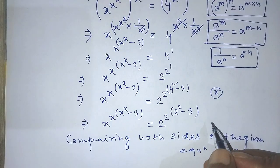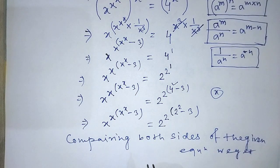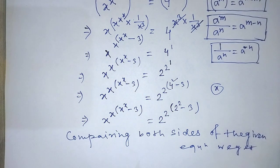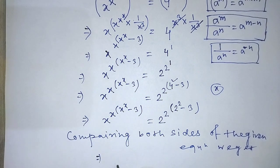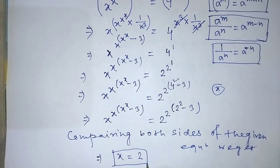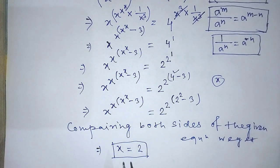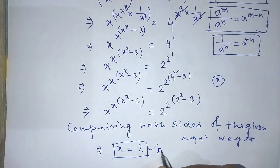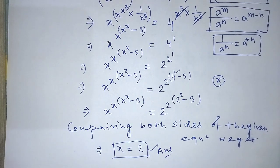To find the value of x from this equation, we compare both sides. After comparing both sides of this equation, we can write x is equal to 2. Our answer is complete. If you like this video and this trick, please support me and subscribe to our channel. Thank you, bye bye.